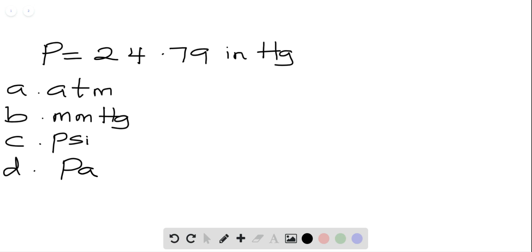And we are told to convert the 24.79 inches of mercury to atmosphere, to millimeter mercury, to psi, and to pascal.